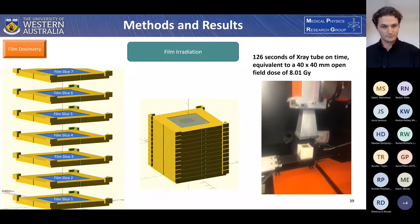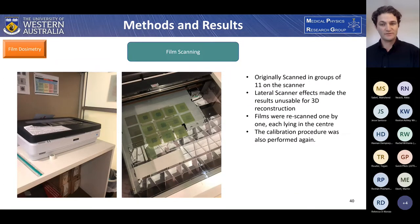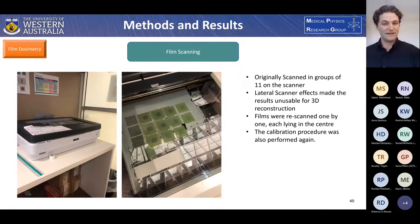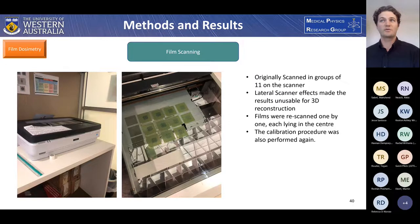Film scanning was done on the Epson Expression 12000XL scanner with two warm-up scans followed by three scans of the films at a resolution of 300 dpi. The films were originally scanned in groups of 11; however, lateral scanner effects made the results unusable for 3D reconstruction. The films were re-scanned one by one, each lying in the center of the scanner, and the calibration procedure was repeated.